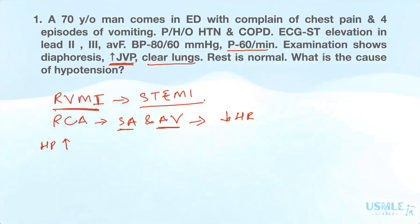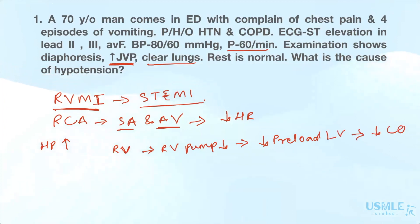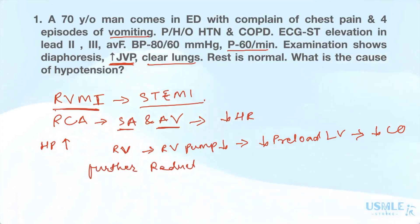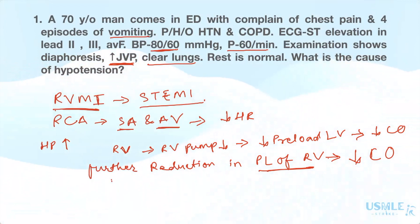What is the cause of hypotension? When there is a right ventricular inferior wall MI, the right ventricle will not pump effectively, so its output decreases. This leads to a decrease in preload of the left ventricle and a decrease in cardiac output. Additionally, the patient is having four episodes of vomiting, which causes further reduction in preload of the right ventricle, leading to even more decrease in cardiac output. So although the patient has a past history of hypertension, he presents with hypotension of 80/60.